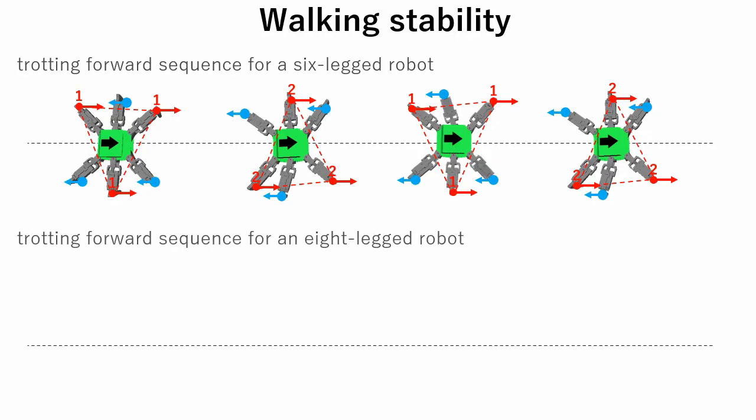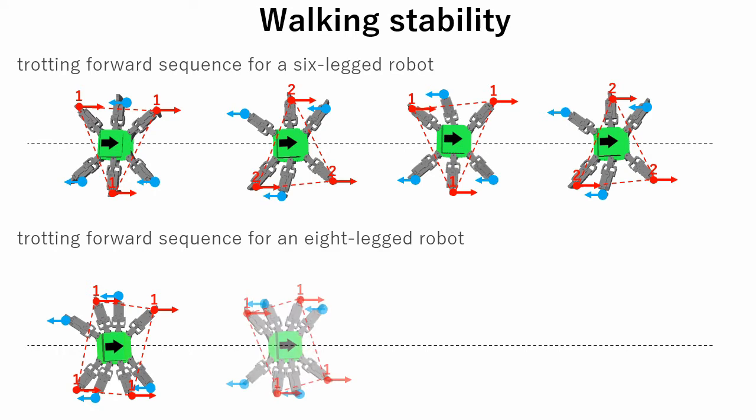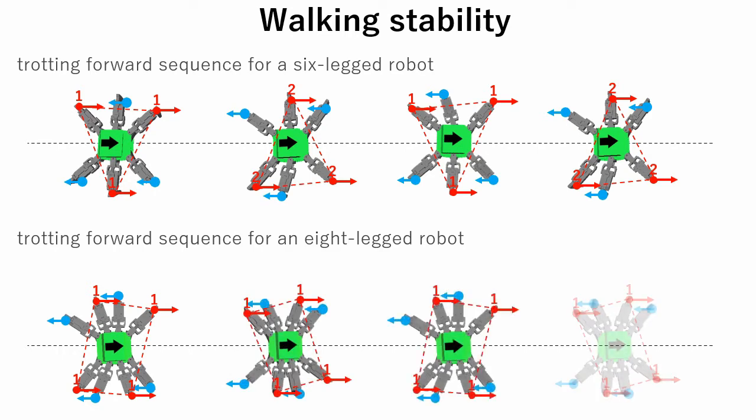This is the sequence of an eight-legged robot. The idea is the same, each pair of legs moves in opposite directions.